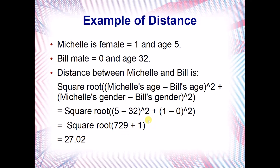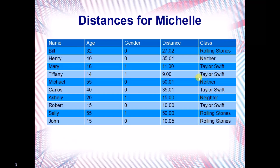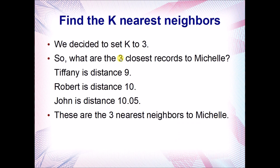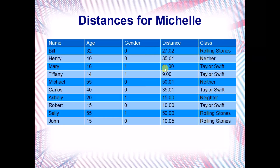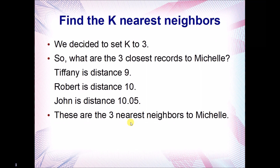Now we go through and compute the distance between Michelle and everyone in the reference data. You can see that some people in the reference data, like Tiffany, are very close to Michelle with a distance of 9, while some are very far away — like Michael with a distance of 50. Since K is set to three, we look at the three closest records to Michelle, which are Tiffany (distance 9), Robert (distance 10), and John (distance 10.05). These are the three nearest neighbors to Michelle.